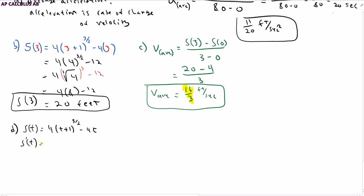S(T) is 4(T + 1) to the 3/2 minus 4T. S'(T) is, we're going to do some work here, it's going to be 4 times 3/2 to the 3/2 minus 1, which is 1/2. The derivative of 4T is 4. This is going to give me 4 times 3/2 is 6. Let's go ahead and simplify this. 1/2 power is the same as square root. So this is the instantaneous velocity.